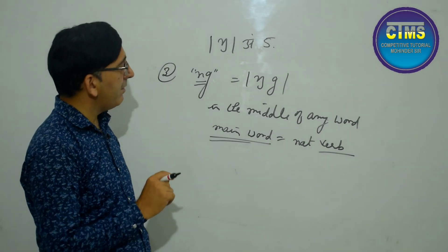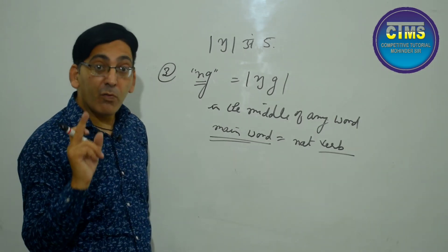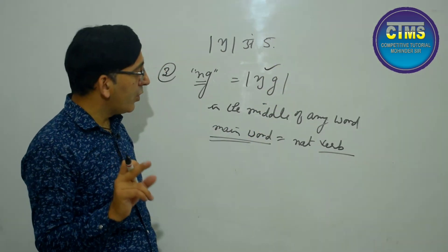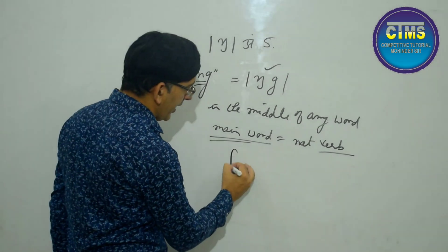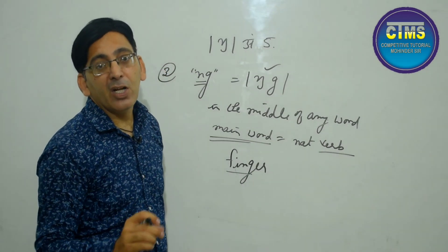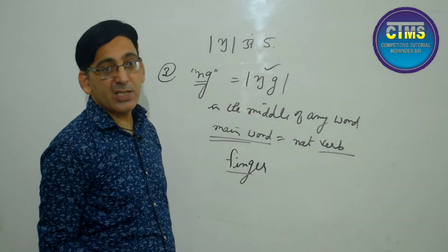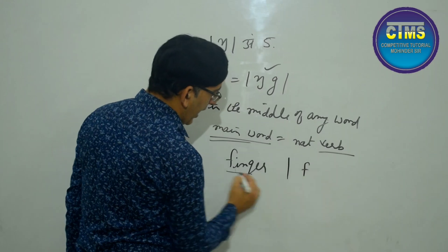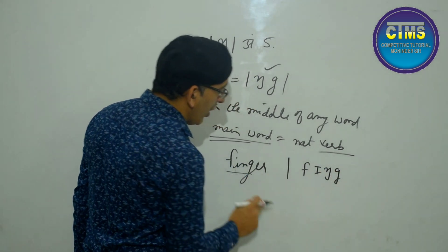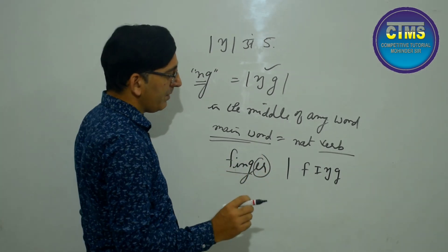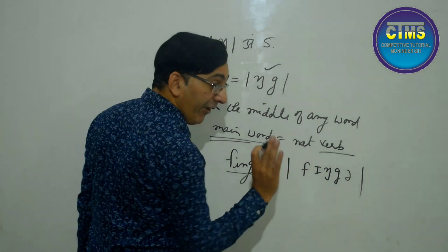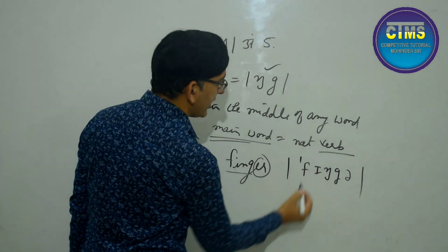In the previous rule, N-G in the middle of a word gives ŋ when the main word is a verb. But if N-G appears in the middle and the main word is not a verb, it gives ŋg. For example: F-I-N-G-E-R — here 'fing' is not a verb, so the N-G gives ŋg. The small 'i' gives /ɪ/, and E-R at the end becomes schwa /ə/. So it's pronounced 'finger', not 'finger' with a hard separate G — it's 'finger'.